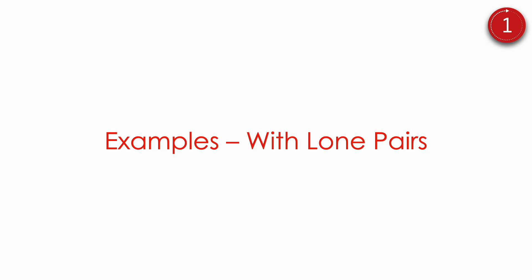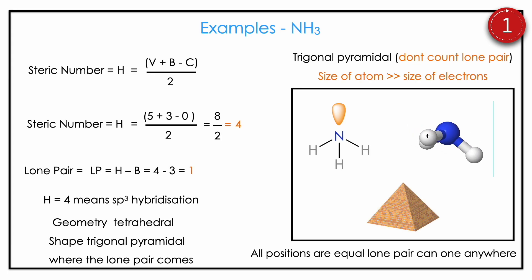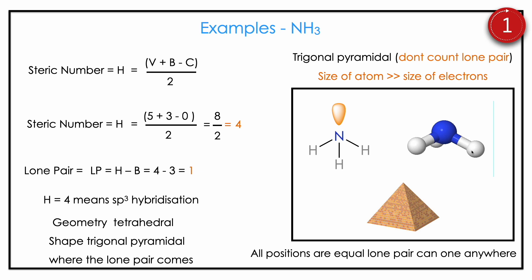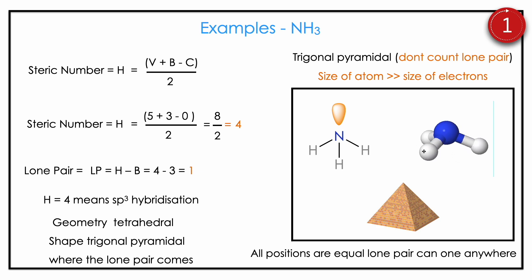Then examples with lone pair — a little more complicated because geometry and shape will be different. Ammonia: nitrogen valence is 5, bonded atoms are 3. H = (5 + 3 − 0) / 2 = 8 / 2 = 4. Lone pair = H − B = 4 − 3 = 1. H = 4 means sp3 hybridization. If you include the lone pair, you have a tetrahedral geometry. But the lone pair is not visible, so it looks like a pyramid — three atoms on a plane with nitrogen going above to create the pyramid. So ammonia's geometry is tetrahedral and its shape is trigonal pyramidal.